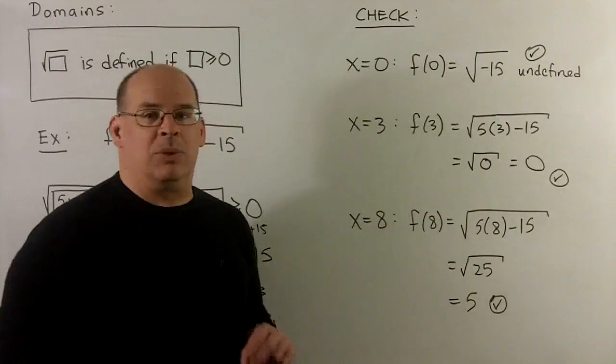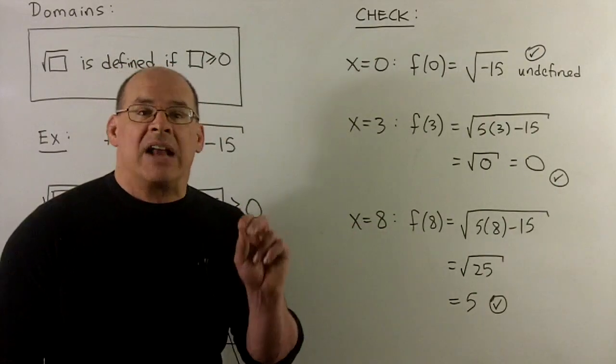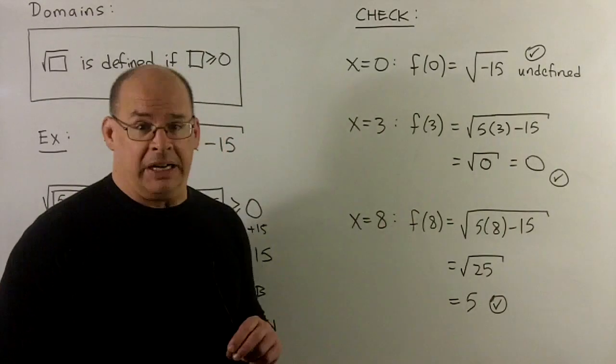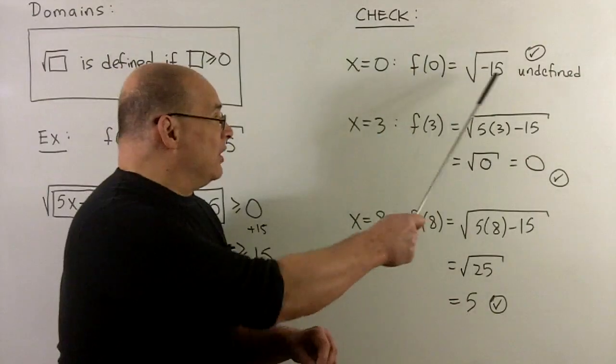This is actually good because we know the good numbers are going to start at 3 and then go off to infinity. So 0 is not in the domain.